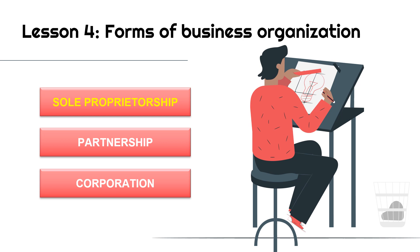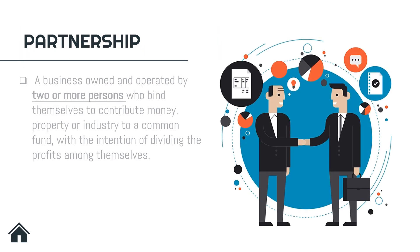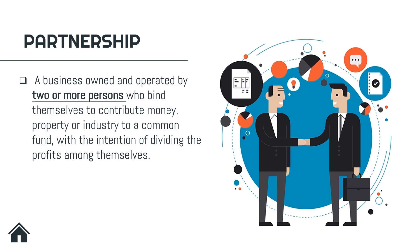Next, we have partnership. It is a business owned and operated by two or more persons who bind themselves to contribute money, property, or industry to a common fund with the intention of dividing the profits among themselves. Unlike sole proprietorship where there is only one owner, in partnership there are two or more persons who contribute money, property, or industry — pooled into a common fund — with the intention of dividing all profits among themselves.